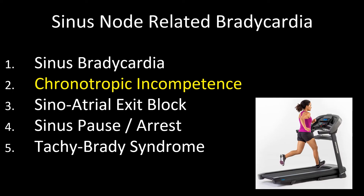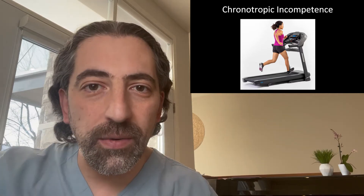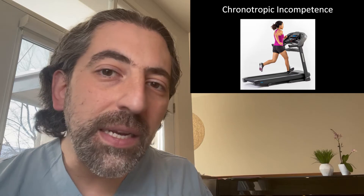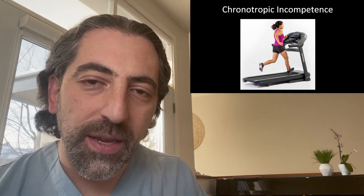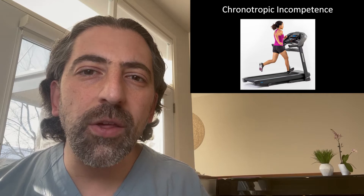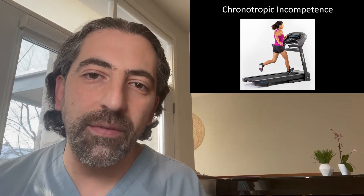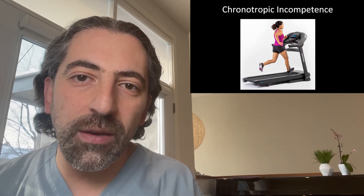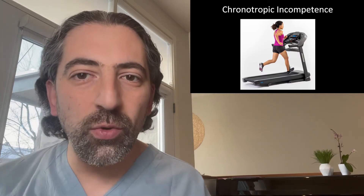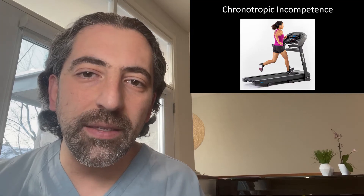The next cause of sinus node-related bradycardias is chronotropic incompetence, which represents failure to achieve your target heart rate during exercise. Studies usually use 80% of your maximal heart rate, where maximal heart rate is 220 minus age. However, it's not that simple — depending on the patient's age, comorbidities, baseline level of exercise, and whether they're athletes or not, there's an expected rise in heart rate compared to activity level, judged clinically. In cases where this is suspected, usually due to shortness of breath on exertion, a stress test can be performed and the results reviewed with the patient to make or exclude the diagnosis.